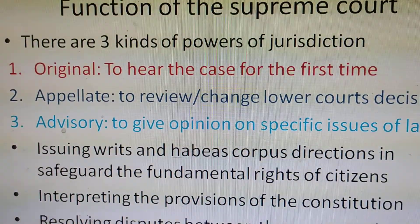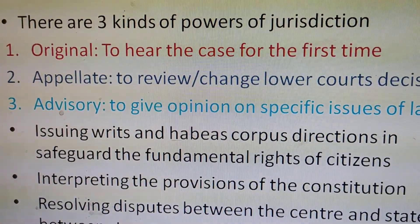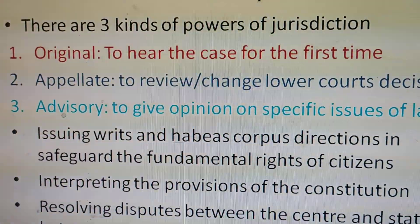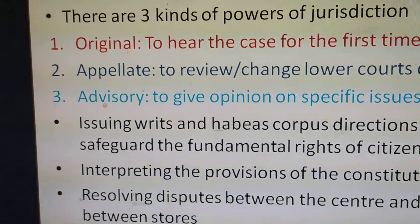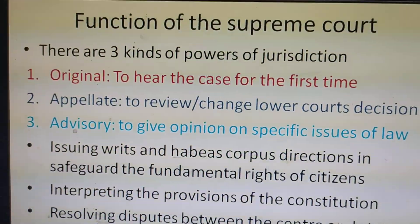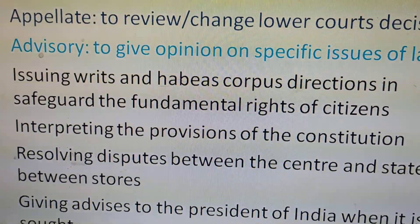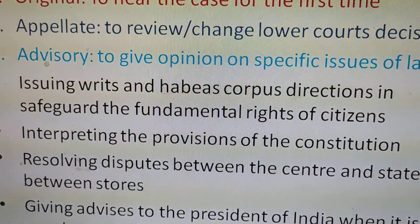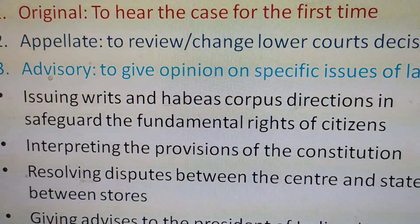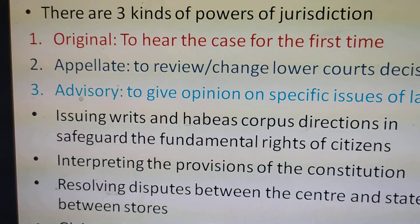Third is advisory jurisdiction — if a state government is confused about a particular article of the constitution, it can ask for the advice of the Supreme Court, and the Supreme Court issues specific opinions about the law. The Supreme Court also issues writs such as habeas corpus to safeguard the fundamental rights of citizens, and interprets provisions of the constitution to provide correct interpretation when different people apply it differently.